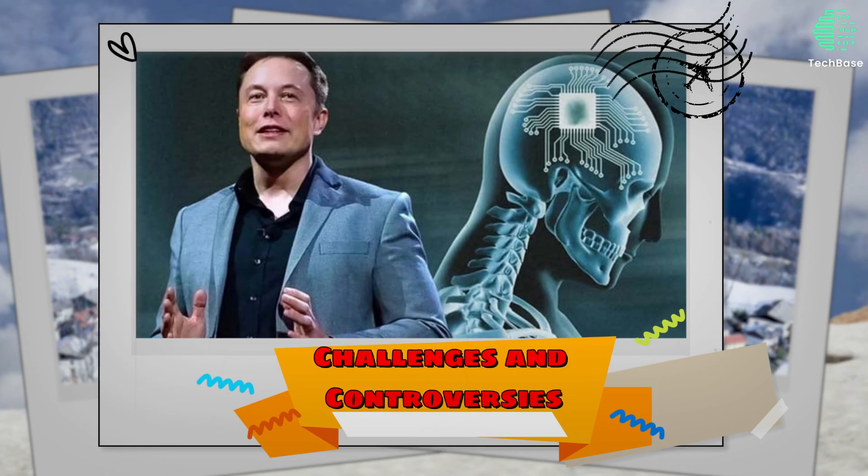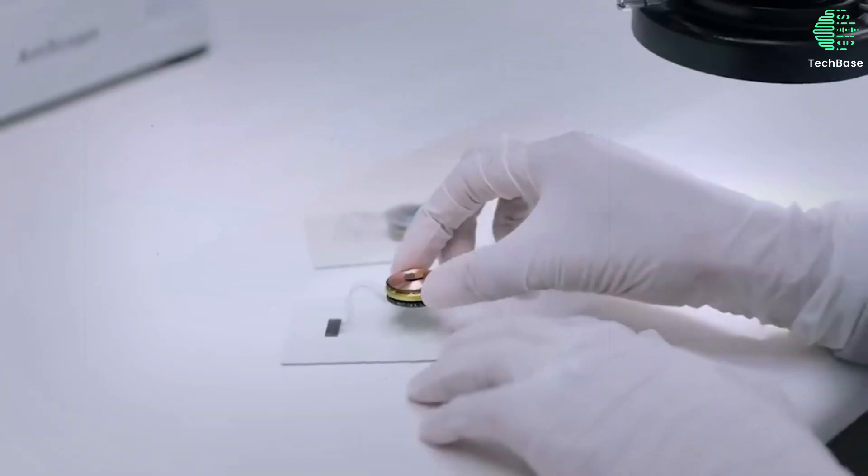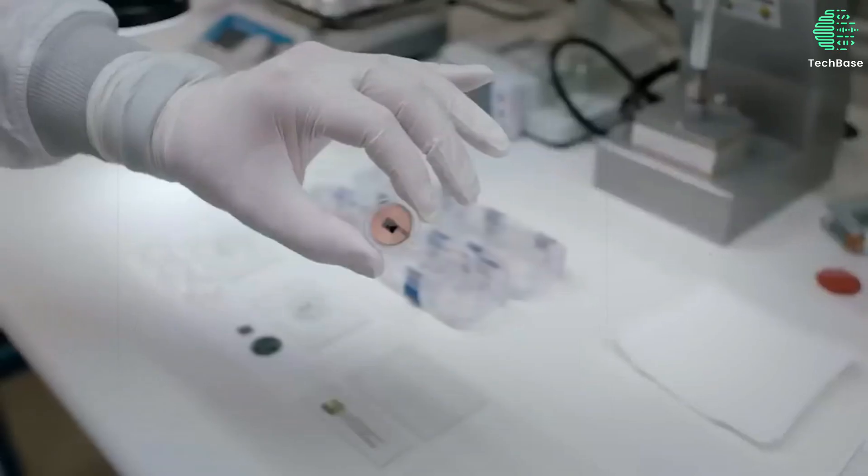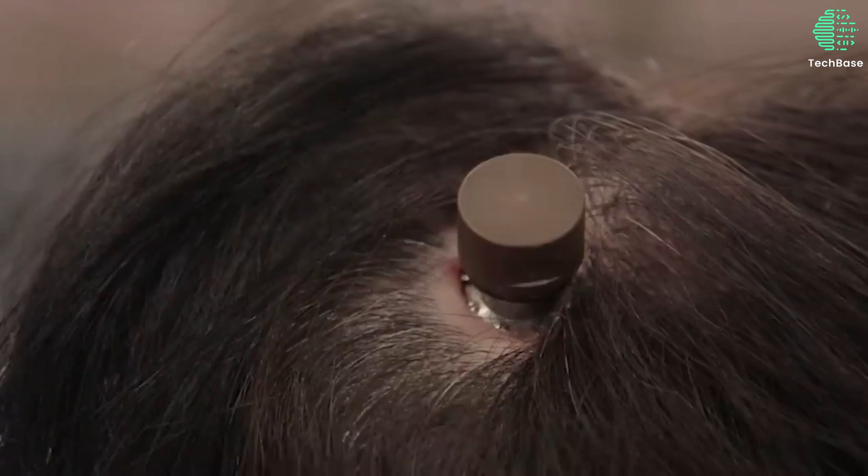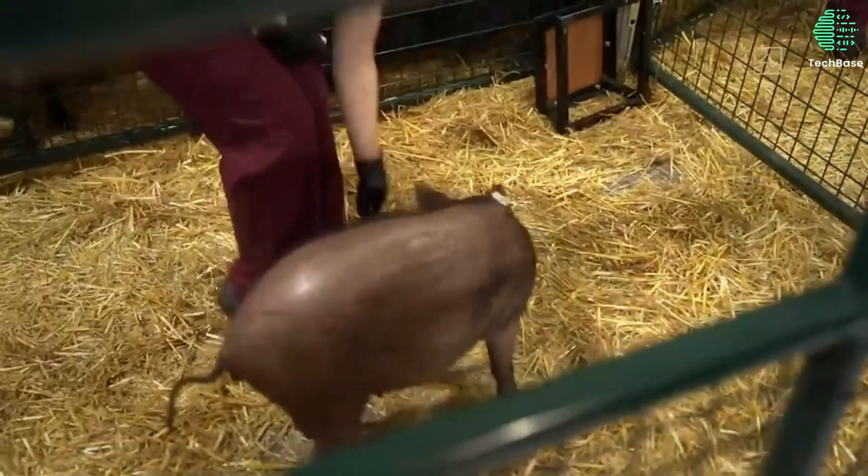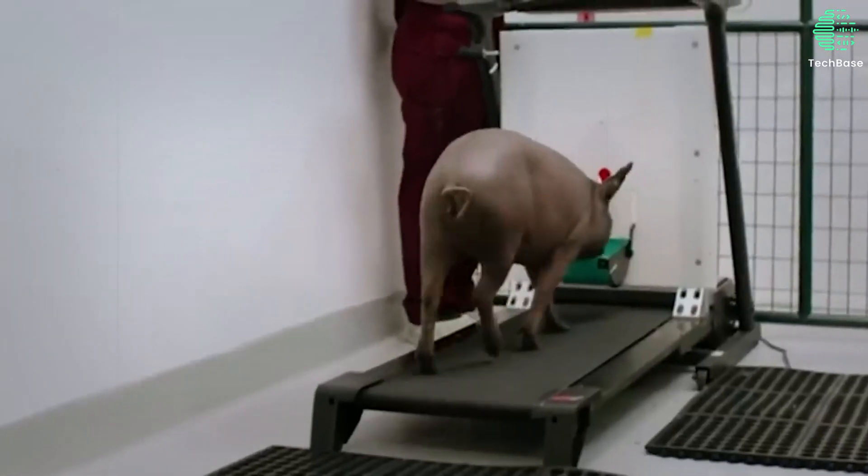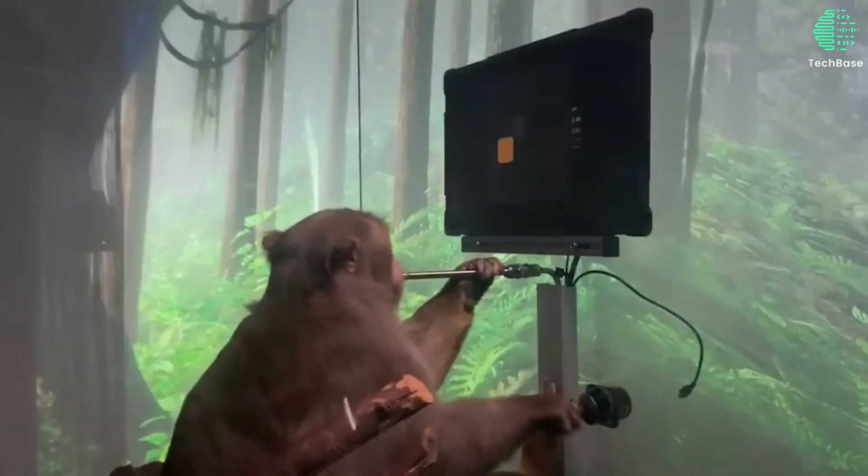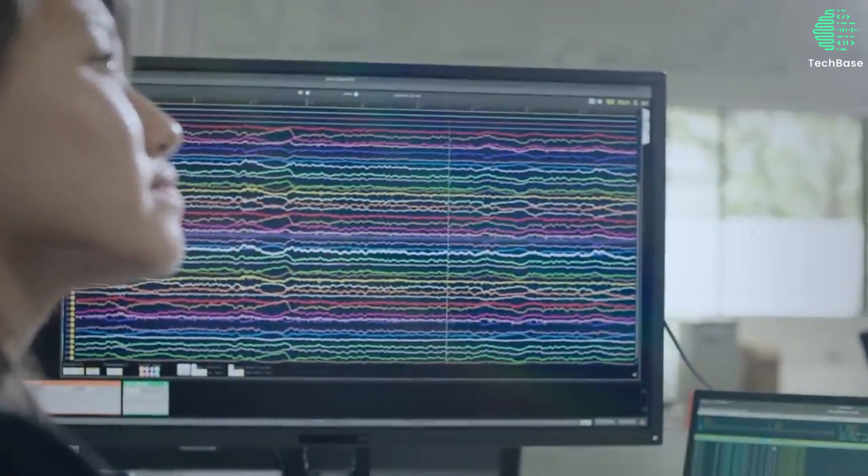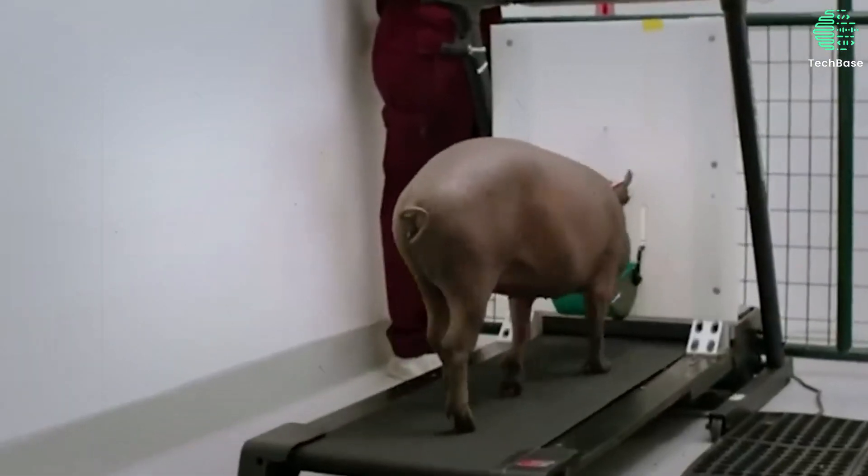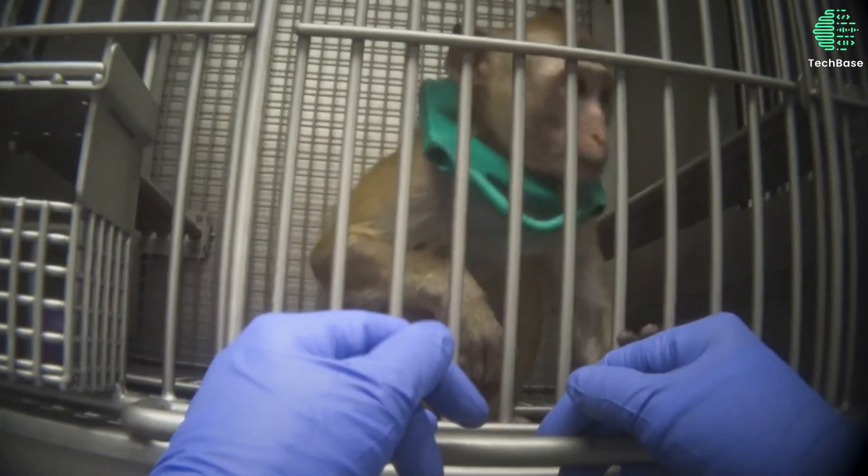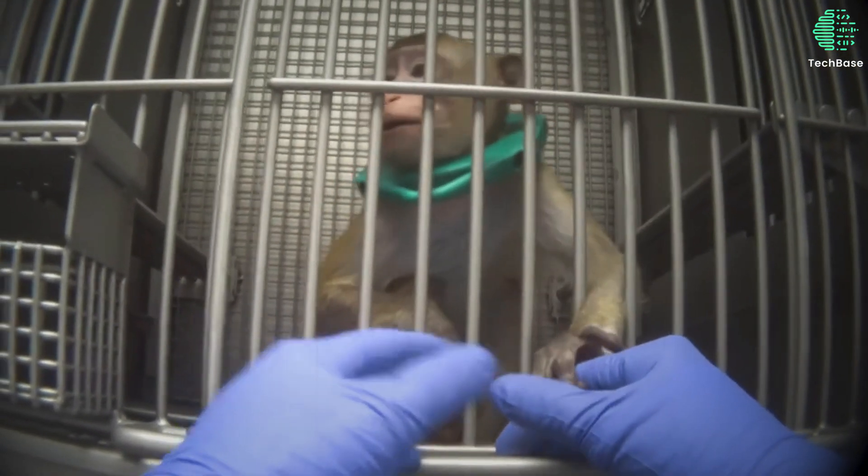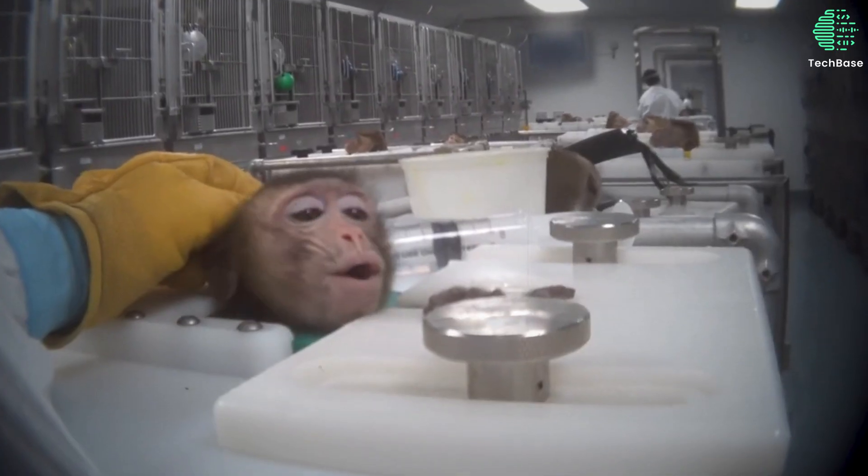Challenges and controversies. Despite its groundbreaking achievements, Neuralink has encountered challenges and controversies that have sparked debate and scrutiny. One notable issue surrounds the ethical considerations of animal testing conducted by the company. Reports of a large number of primates euthanized during medical trials raised concerns about animal welfare and the ethical implications of Neuralink's research practices. Accusations of inadequate animal care and invasive experimental procedures led to scrutiny from medical ethics groups and regulatory bodies.